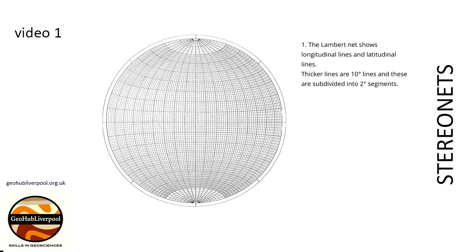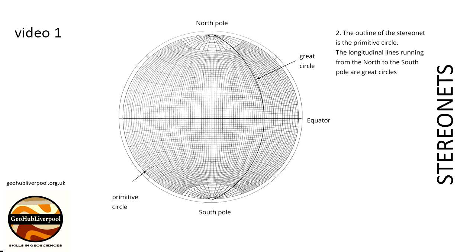On the StereoNet the thicker lines are 10 degrees apart, the subdivisions are at 2 degrees. The outline of the StereoNet is the primitive circle. This circle is labelled on the StereoNet.